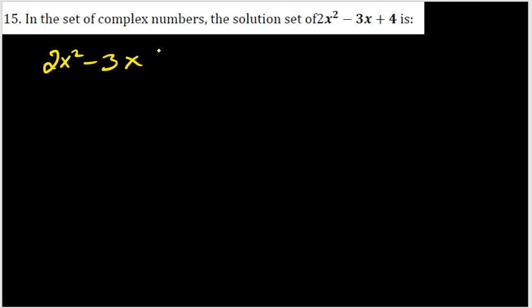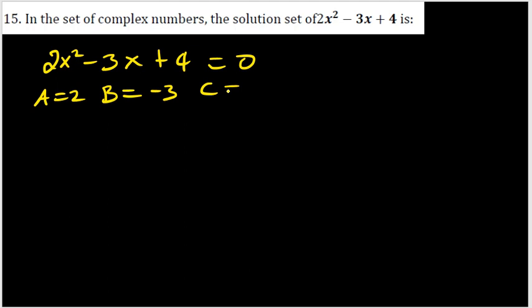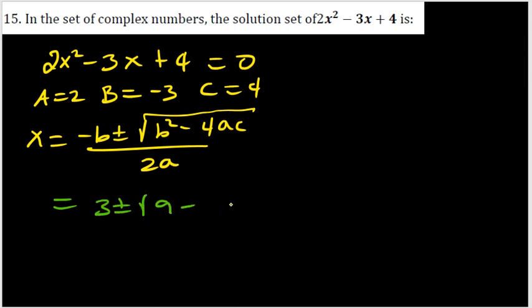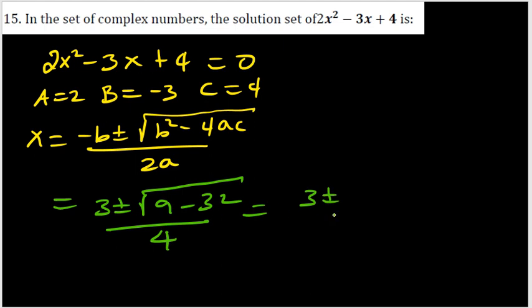Next question: solve on the set of complex numbers the quadratic equation 2x² - 3x + 4 = 0. Applying the quadratic formula with a=2, b=-3, c=4: x = [-(-3) ± √((-3)²-4(2)(4))] / (2·2) = [3 ± √(9-32)] / 4 = [3 ± √(-23)] / 4.